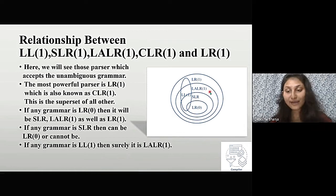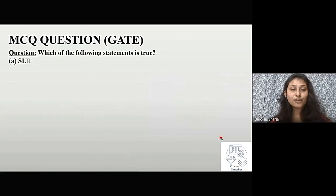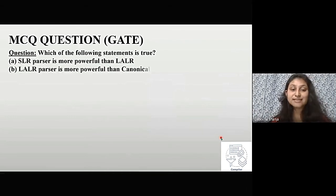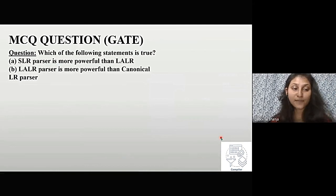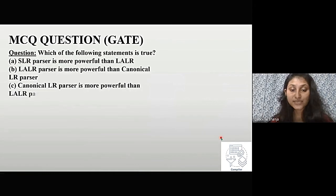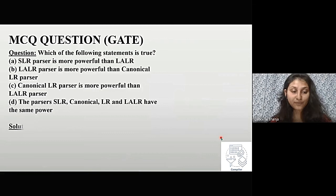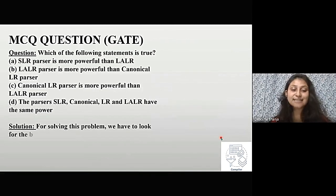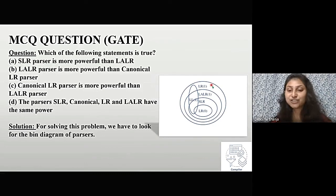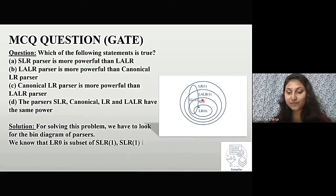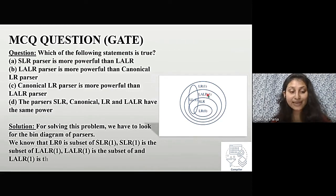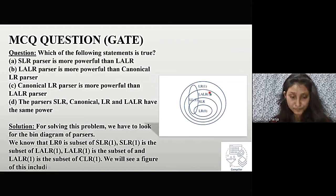The first gate question is: which of the following statements is true? Option A: SLR parser is more powerful than LALR. Option B: LALR parser is more powerful than canonical LR parser. Option C: Canonical LR parser is more powerful than LALR parser. Option D: SLR, canonical LR, and LALR have the same power. To solve this, we look at the diagram of parsers and recall the relationship. We know LR0 ⊆ SLR1 ⊆ LALR1 ⊆ CLR1.